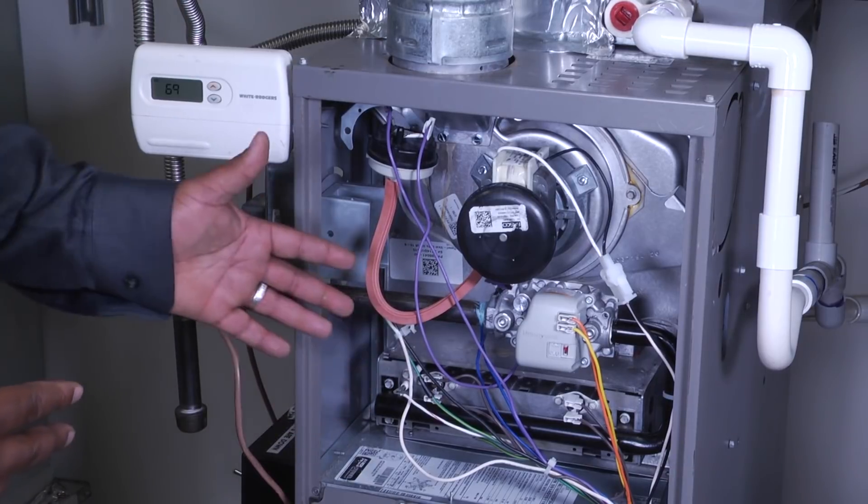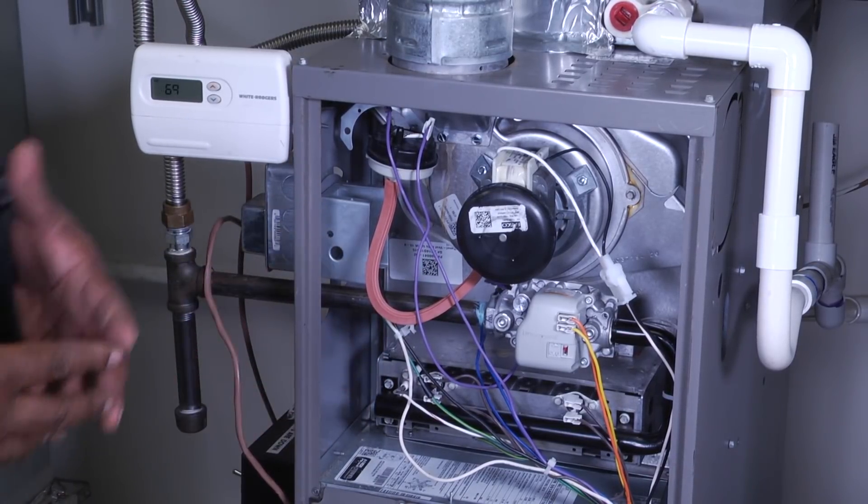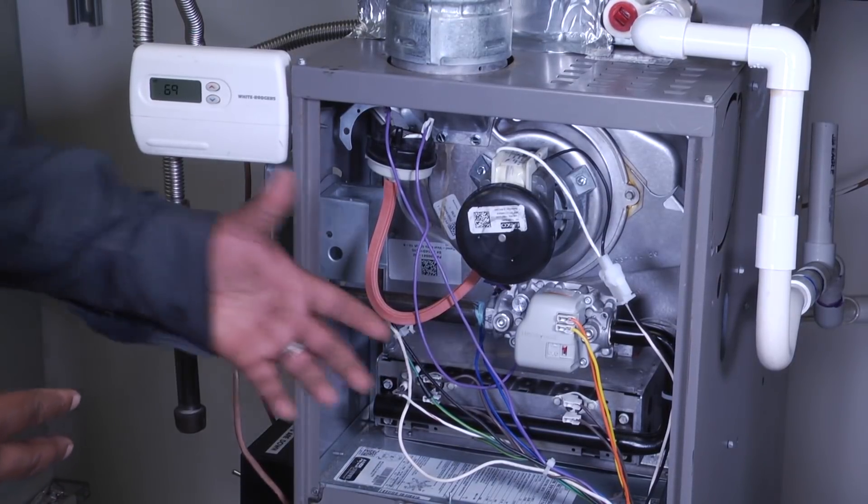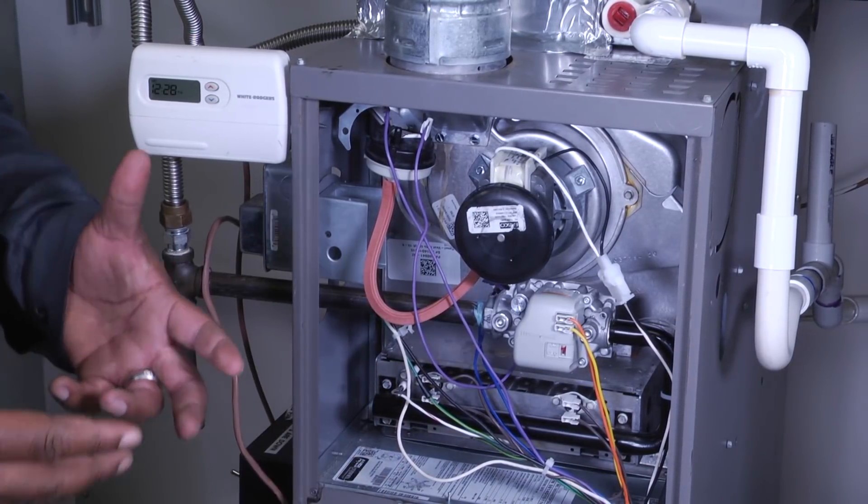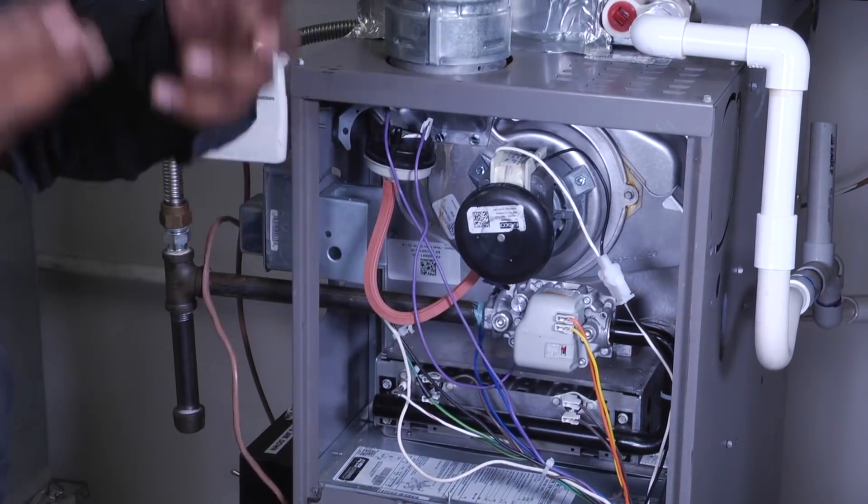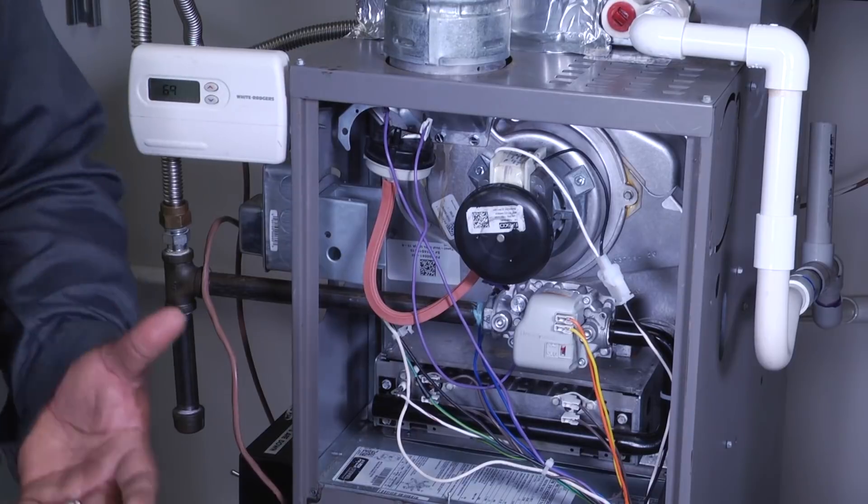On the other end of the hot surface igniter, we have our flame sensor which is going to prove to us that we have a flame, letting the system know that everything is okay. And then finally, our blower motor is going to kick on once we have that heat inside of our heat exchanger and push that heat through the house, thus satisfying our customer.